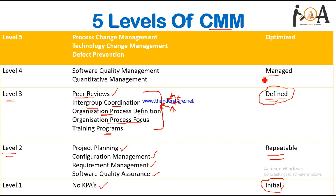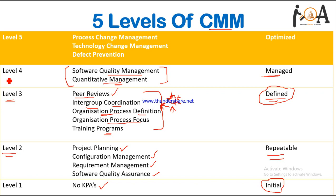After that, level 4 is the Managed level. In this, software quality management and quantitative management are the KPAs. In software quality management, the quality of the software is maintained by the development team as assured to the user at the time of the SRS or project discussion. Quantitative management is also done at level 4, so both software quality management and quantitative management are worked on together.